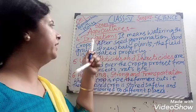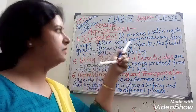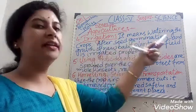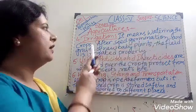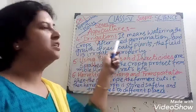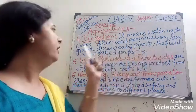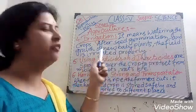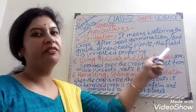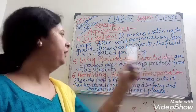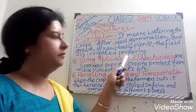Fourth, irrigation. It means watering the crops. After seed germination and growth of new plants, the field is irrigated properly.